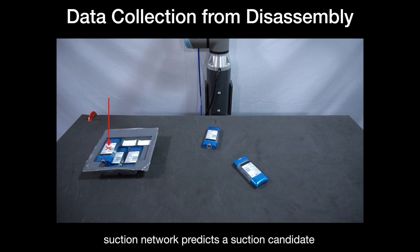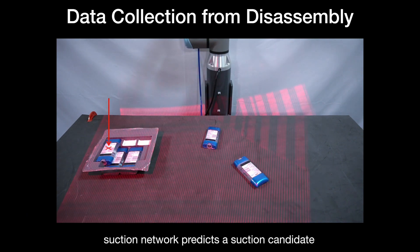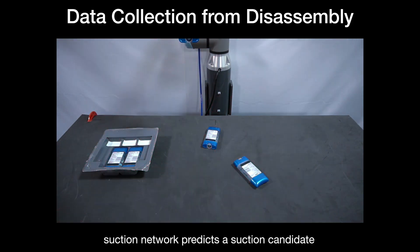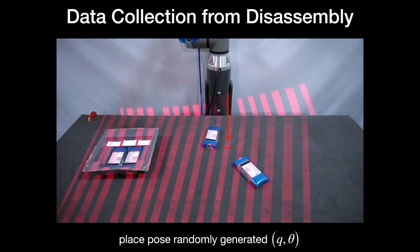To do so, the suction network first predicts the suction location inside the kit, which is executed by the suction primitive to grasp the object. If the grasp is successful, the robot randomly places and orients the object on the work surface.